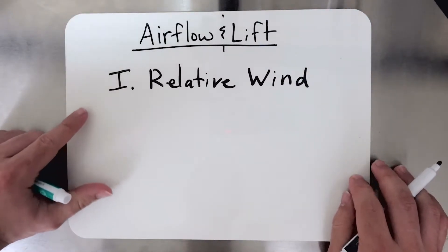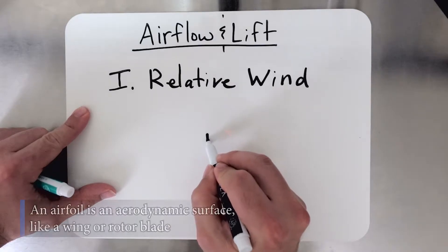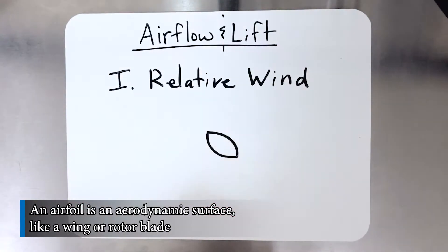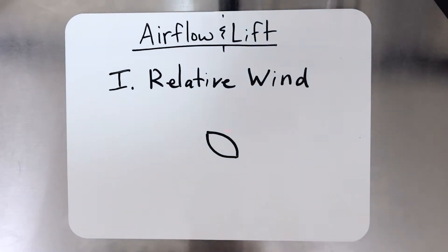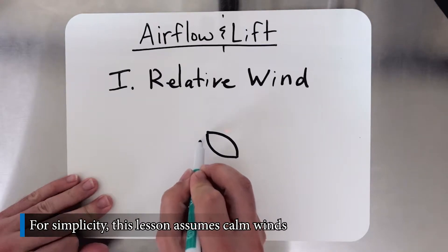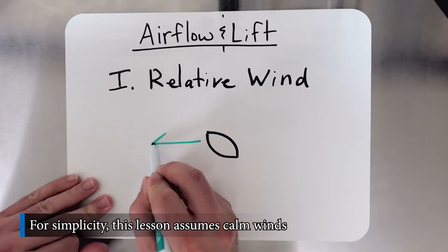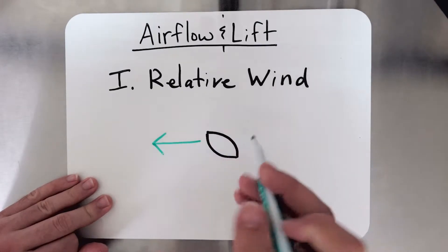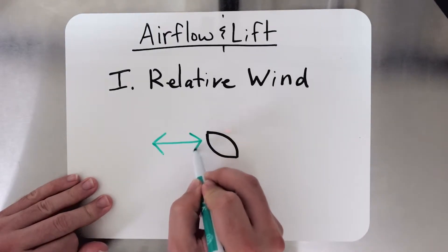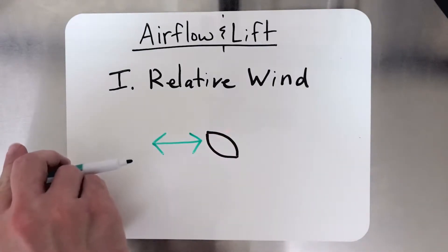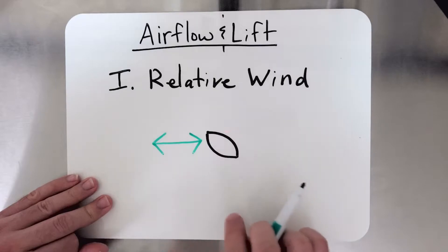And like I said, this is very simple. We'll take an airfoil, here's our airfoil, and assume this airfoil is moving through the air in a certain direction. If the airfoil is moving in this direction, the relative wind is parallel to the direction of movement, but in the opposite direction. So the airfoil is moving this way, the relative wind is opposite in this direction.